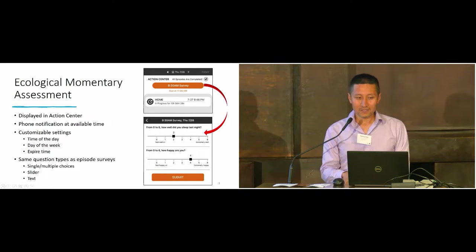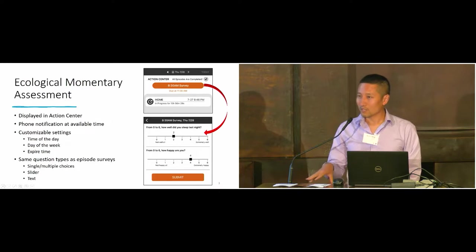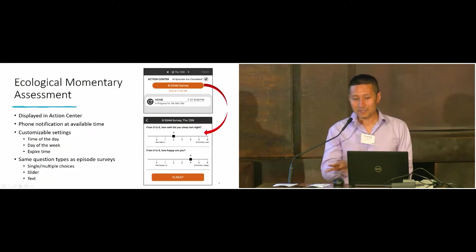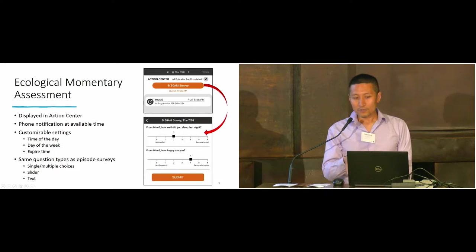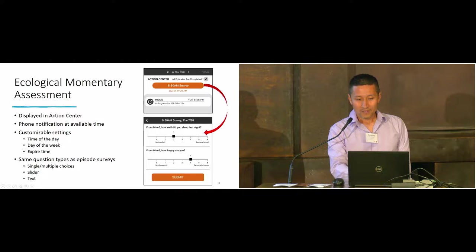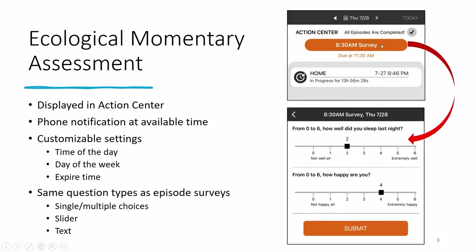The first feature is ecological momentary assessment. In our older version, all the surveys were based on a trip or activity of the participants—surveys related to the activity or trip. We did have a feature called end of day, which was kind of like an EMA feature, but that was only one time a day at a fixed time. In this new feature, we want to make it more flexible. The EMA surveys are displayed at the top of the screen. In this example we have an 8:30 survey, and at 8:30 the phone will deliver a notification to remind users that this survey is available.